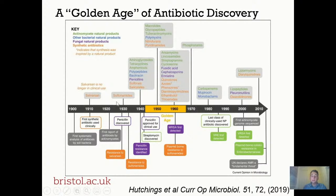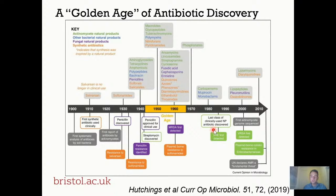Indeed, what we've seen since that time for all drugs that have been brought to clinic is ultimately the emergence of resistance. Penicillin resistance was identified even before penicillin had been administered to a human patient. Sometimes resistance emerges that quickly; in other cases it can take decades. Glycopeptides like vancomycin — key drugs for treating methicillin-resistant Staphylococcus aureus — resistance to glycopeptides was not detected until the mid-1980s, more than three decades after these drugs were first brought to clinic. So the emergence of resistance happens on a very variable timescale, but so far it has always happened.